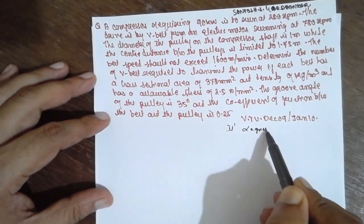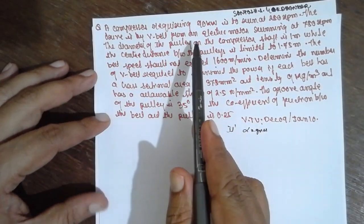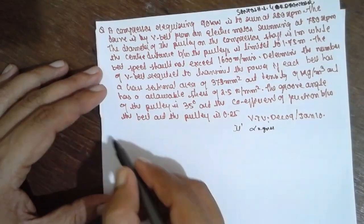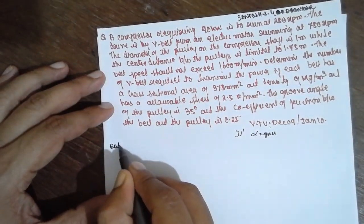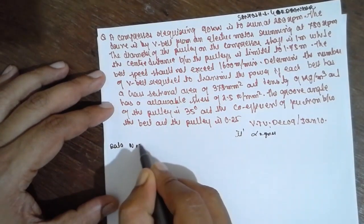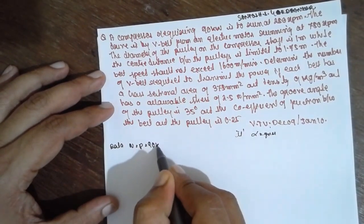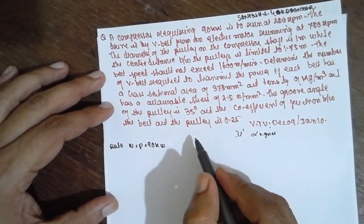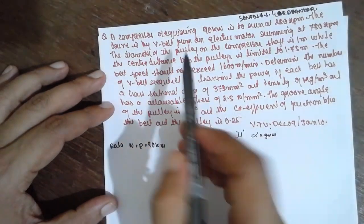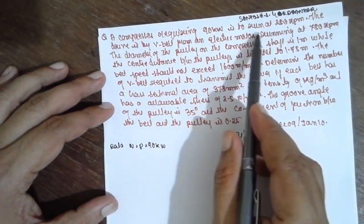What we have to do: the compressor running at 90 kW. Data is given. N is equal to P is equal to 90 kW.